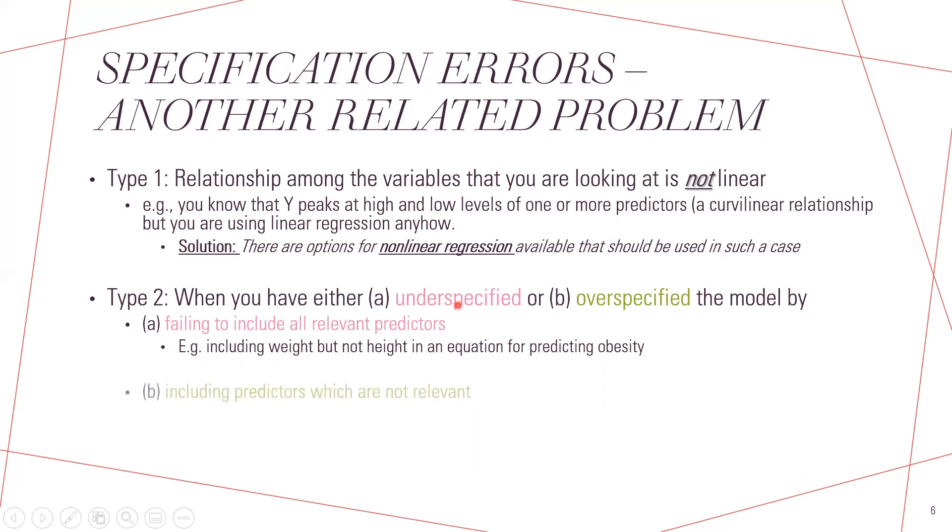And then we have another kind of over-specified model. It means we are including all the predictors which are not relevant to us, like adding the weight and height and including the BMI also to predict the obesity rate or waist circumference. So that is over-specified model, that is including all the variables which, the BMI is not relevant.